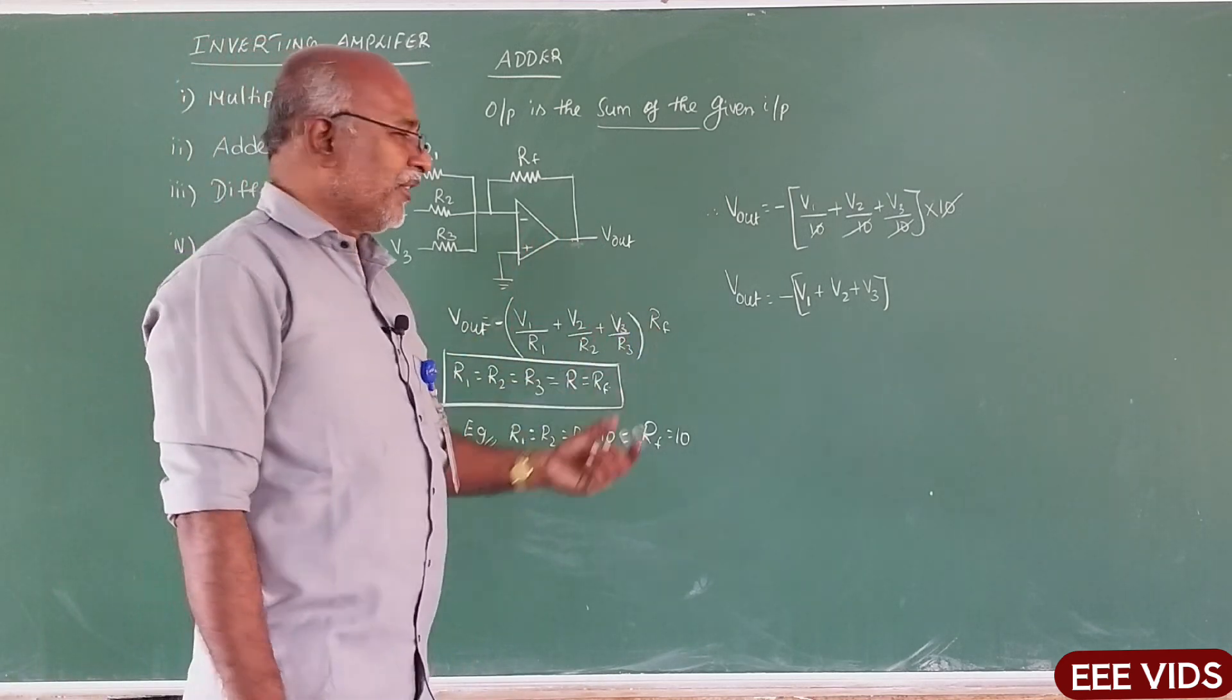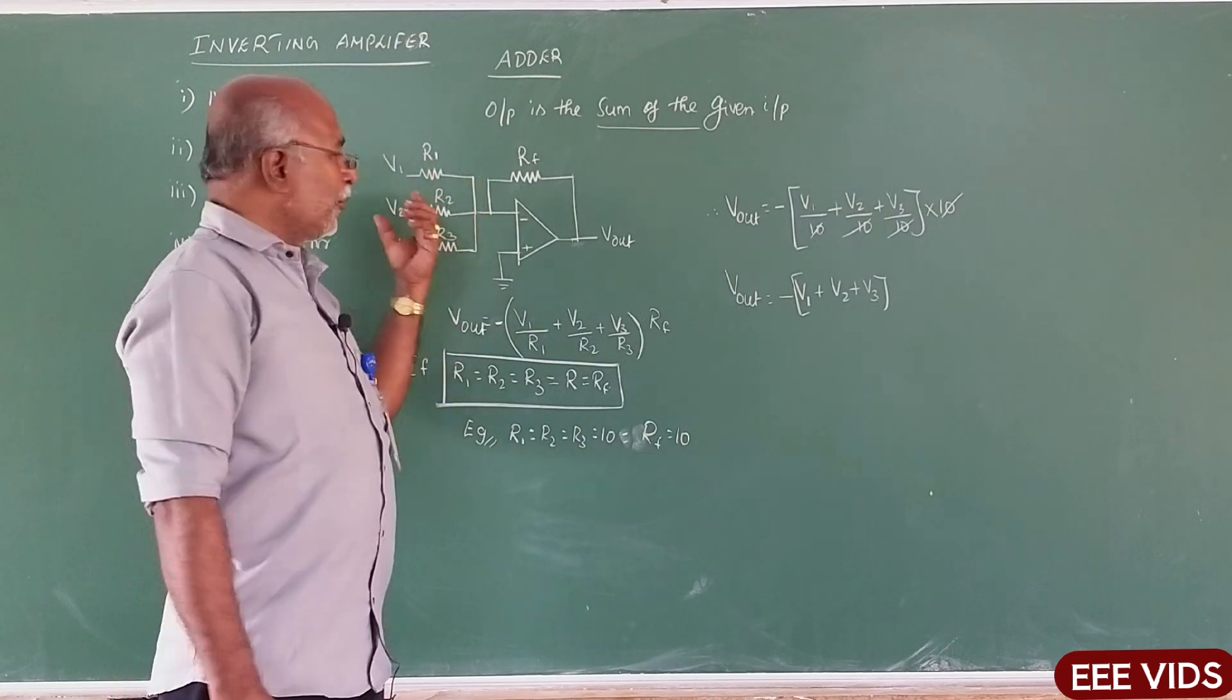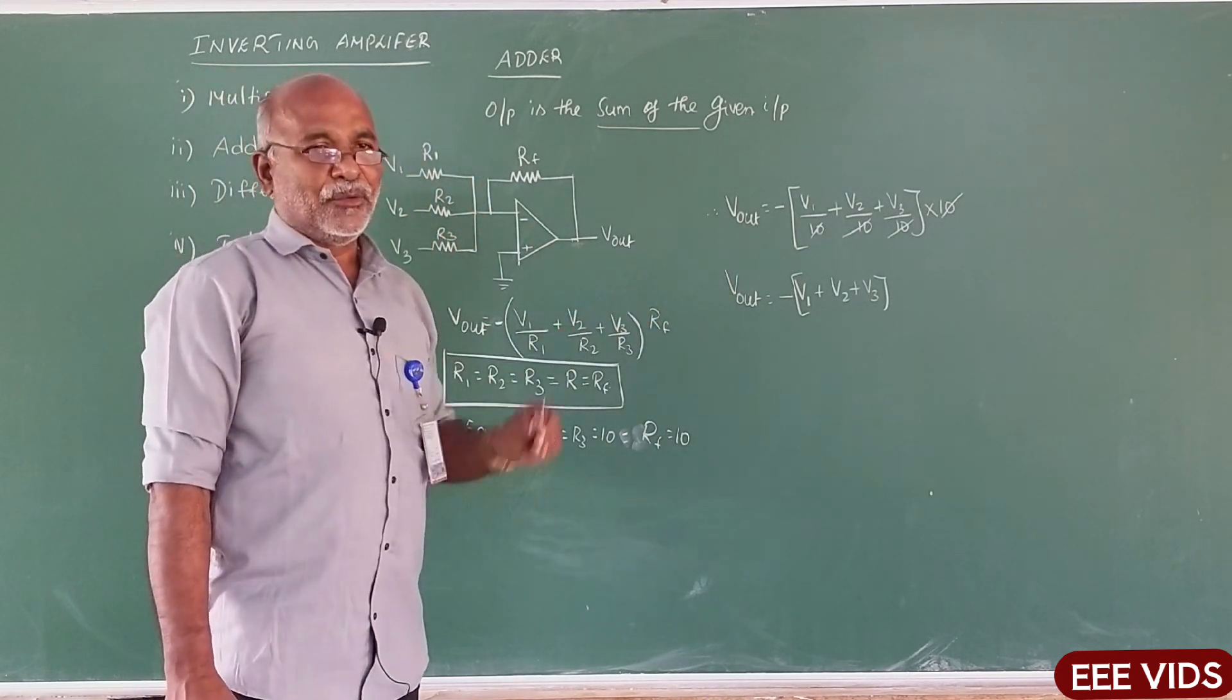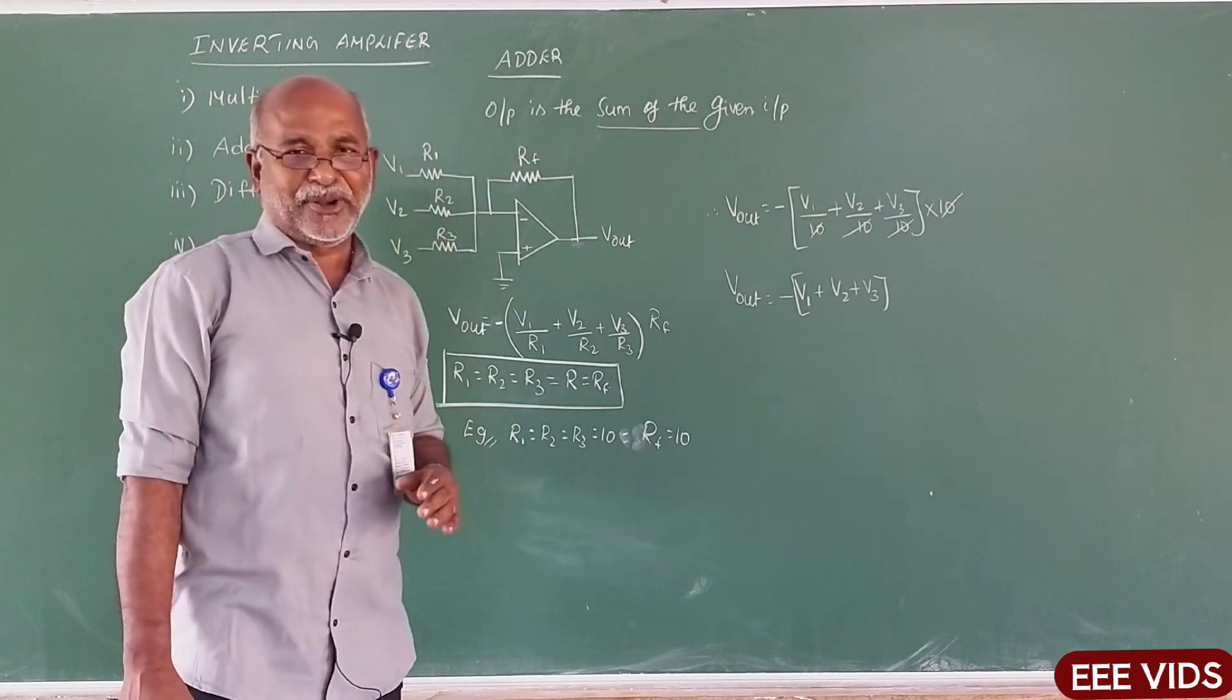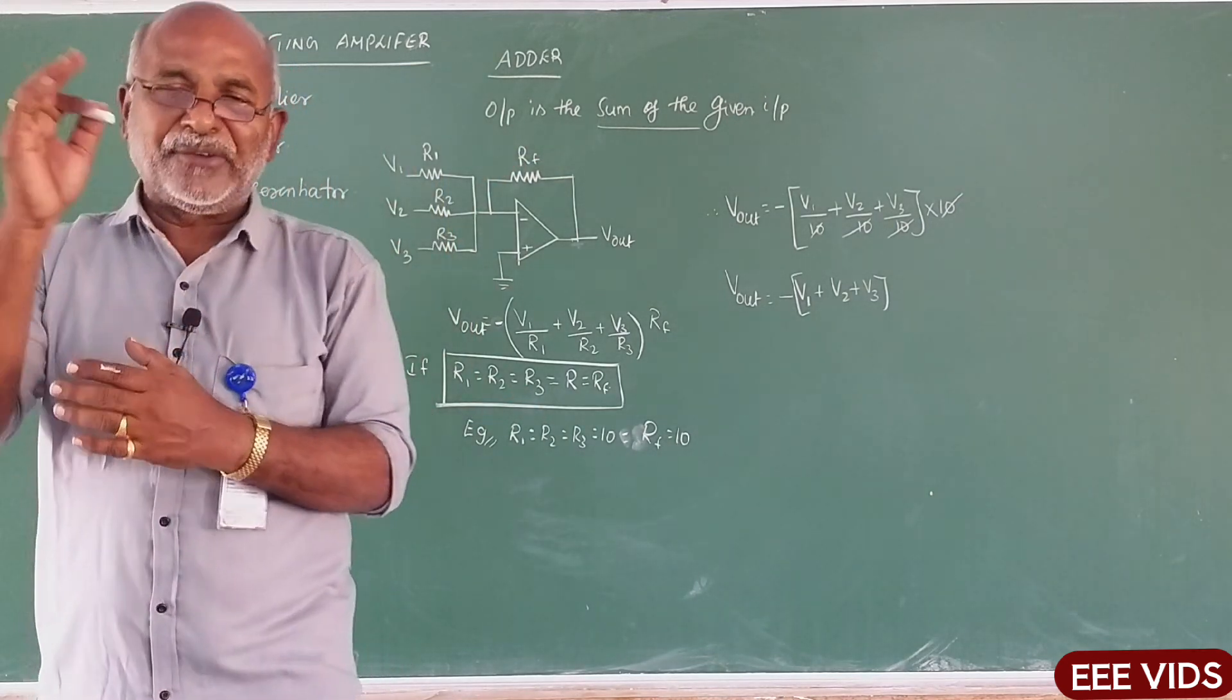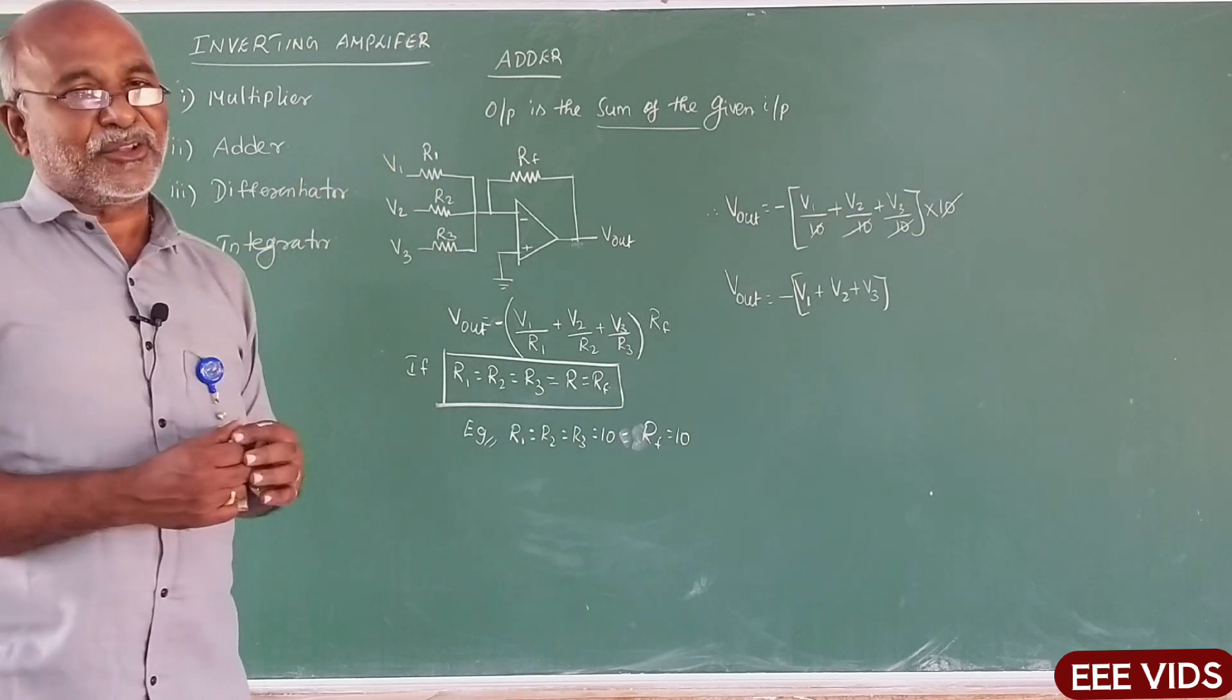Therefore, the sum of the output is the sum of the given input. Now, multiple inputs. If all resistances have equal value, then output is the sum of the given input. The input you give is the sum. So that's why it's called the adder circuit.